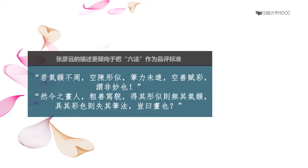为什么说张彦远倾向于把六法作为品评标准呢?因为他在《历代名画记》里还有这样的陈述:若气韵不周,空陈形似,笔力未遒,空善赋彩,谓非妙也。然今之画人,粗善写貌,得其形,而无其气韵,据其彩色,则失其笔法,岂曰画耶。张彦远是在评古画、今画,也就是他把这六法当作品评标准。